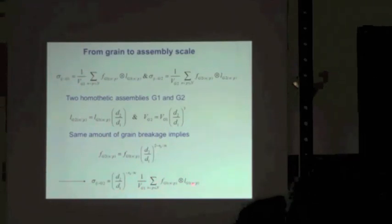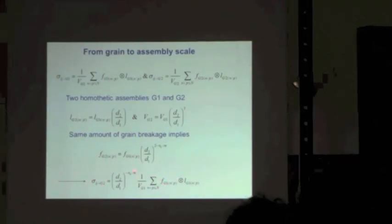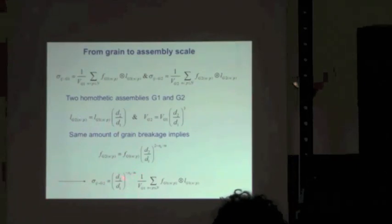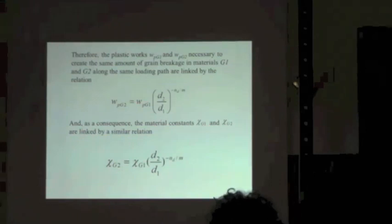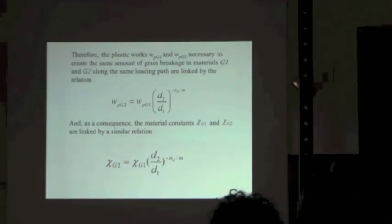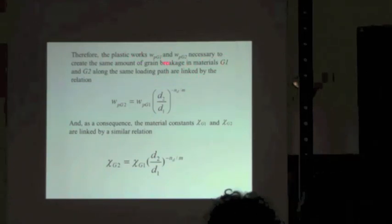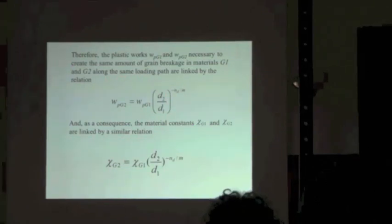The stress applied on granular assembly G2 is equal to the stress state in G1 multiplied by a size effect factor. You can see that the size effect is given by the ratio (D2/D1) raised to the power minus Nd over M. So we just need to calibrate this ratio. The plastic works necessary to create the same amount of grain breakage in assemblies G1 and G2 along the same loading paths are linked by a relation directly derived from the previous stress relation between G1 and G2.